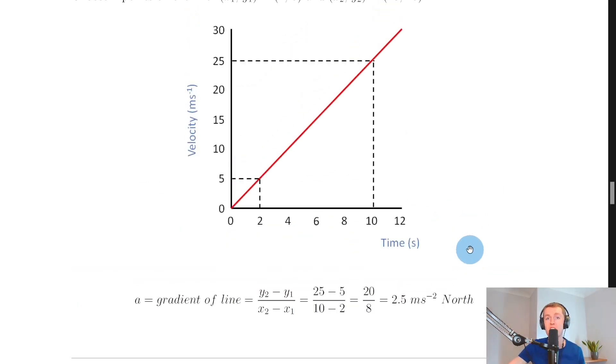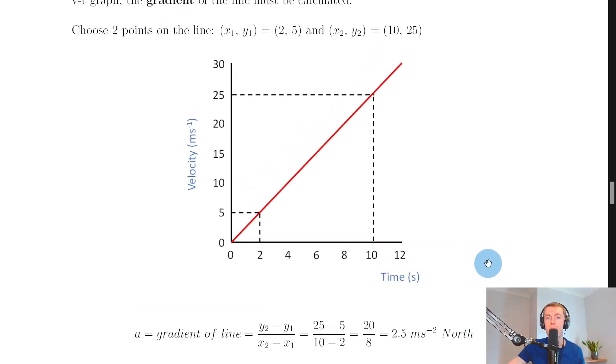So that's the first way of doing it, but you could also do it using the acceleration equation to get the same answer. I'd pick my values of u, v, and t and sub them into a equals v minus u over t, the acceleration equation. In this case, my initial velocity u would be zero because we start off at zero meters per second. I could take my final velocity v to be this point up here, which is at 30 meters per second.